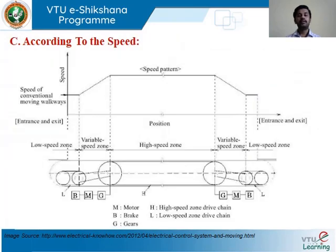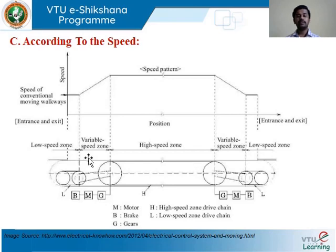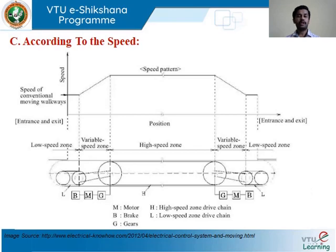Next is the speed. Looking at this diagram, you can see the speed pattern of how a travelator works. As soon as you step onto the travelator, there is a low speed zone. Next, there is a slightly variable speed zone, and then a high speed zone. This allows you to govern and modulate the movement from low to high speed.